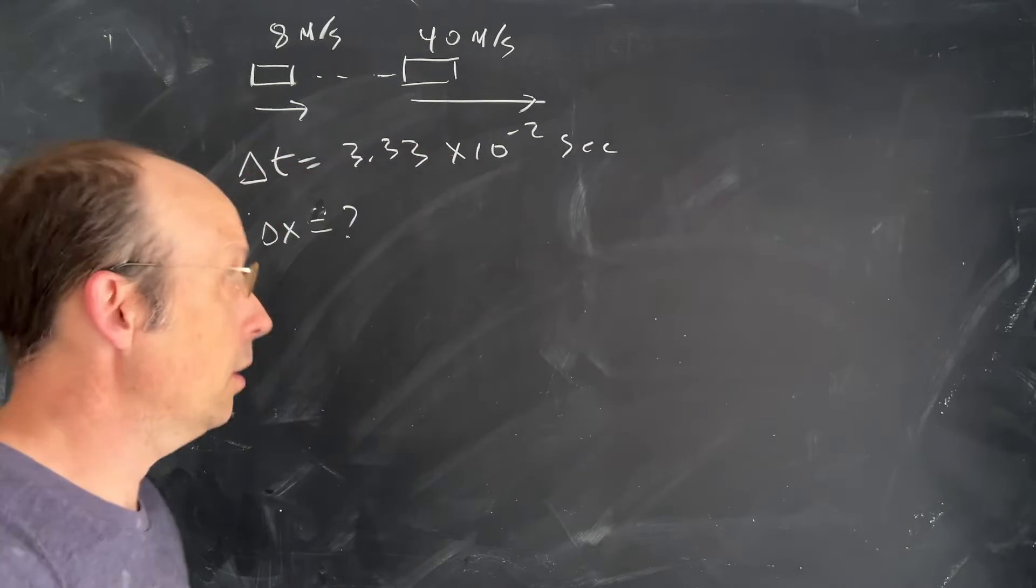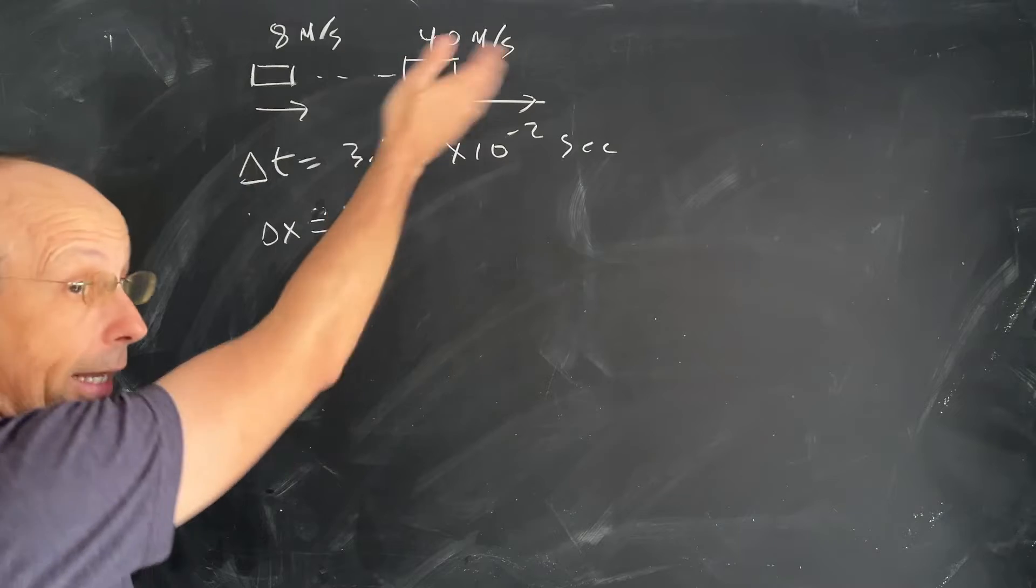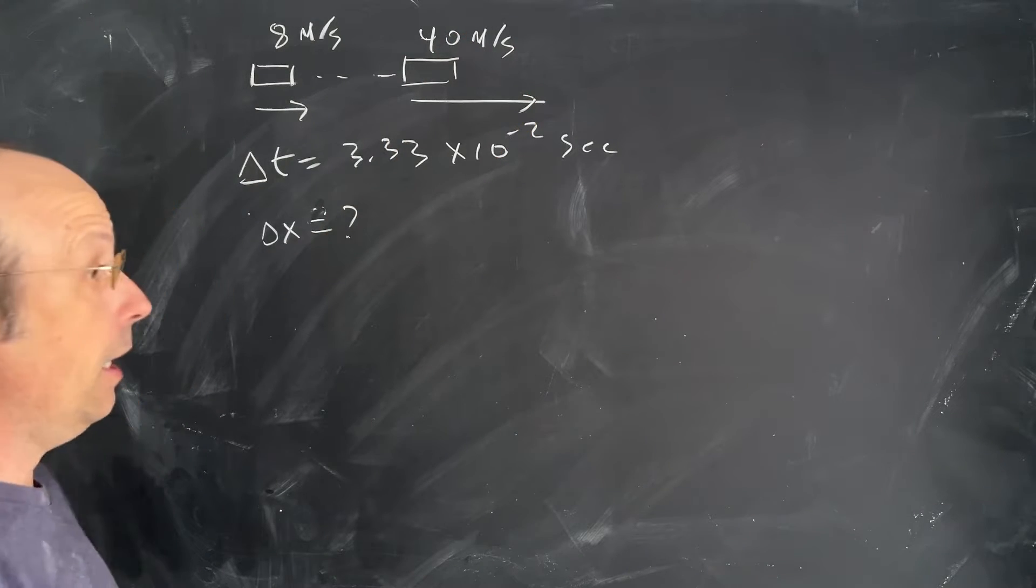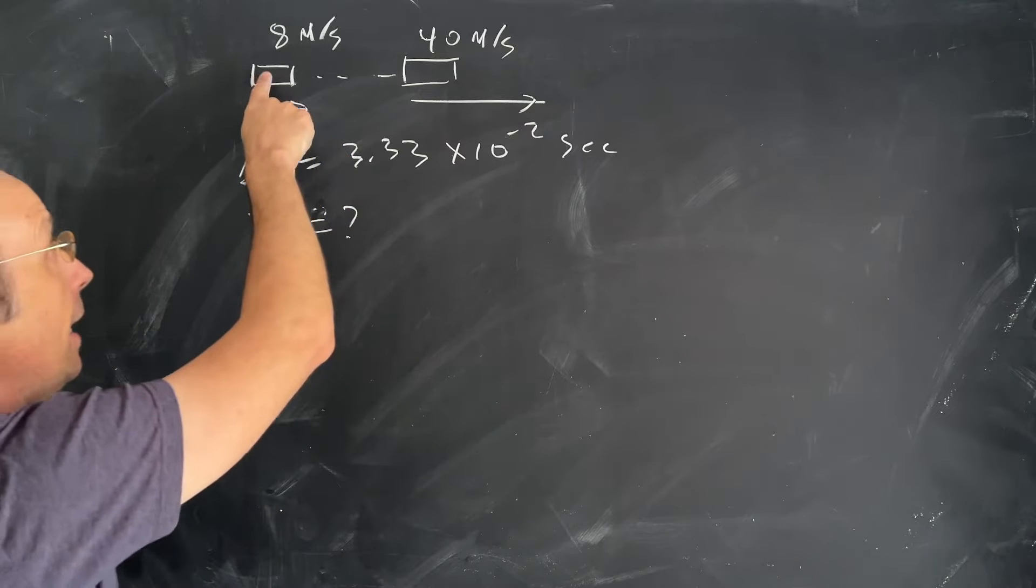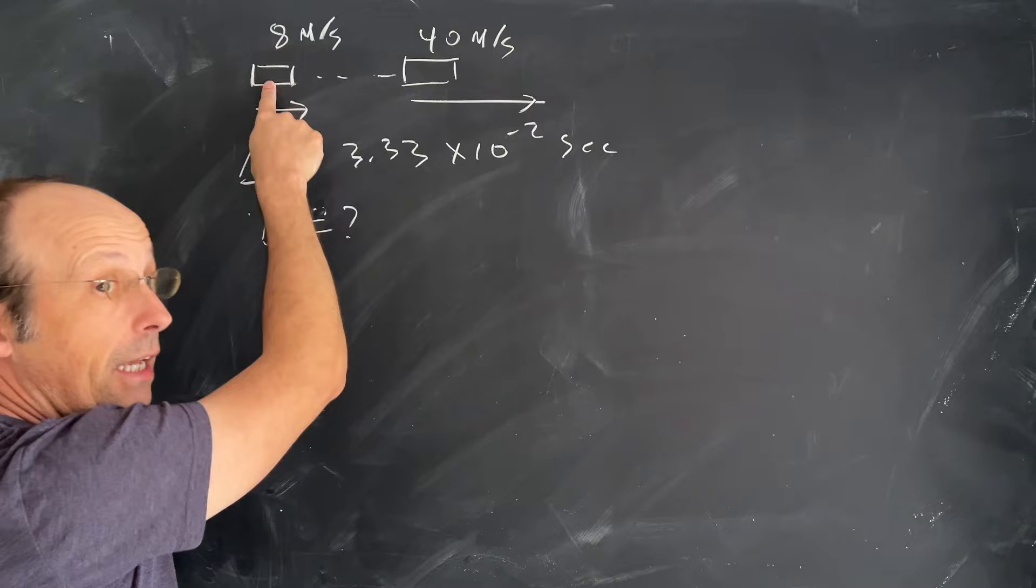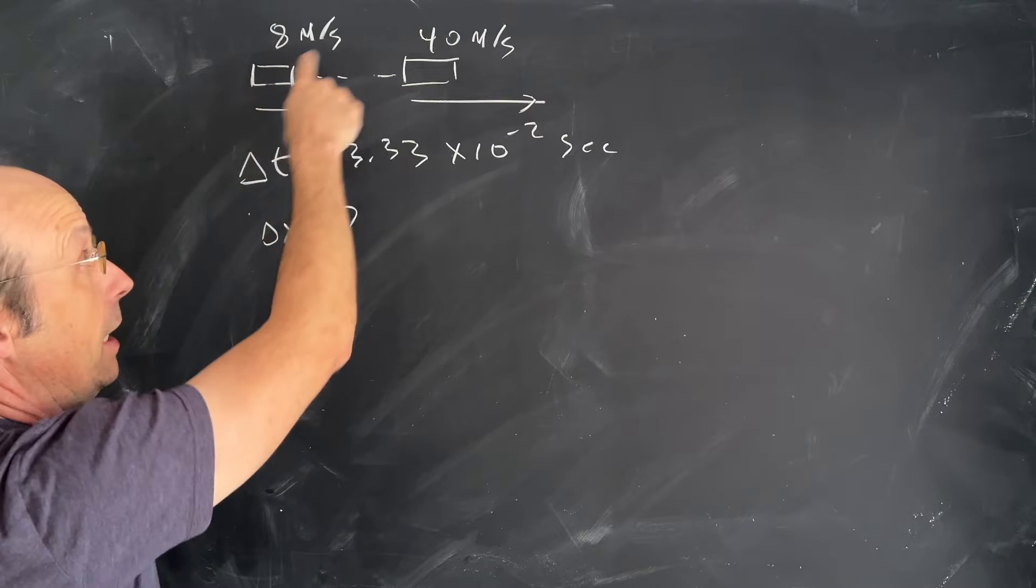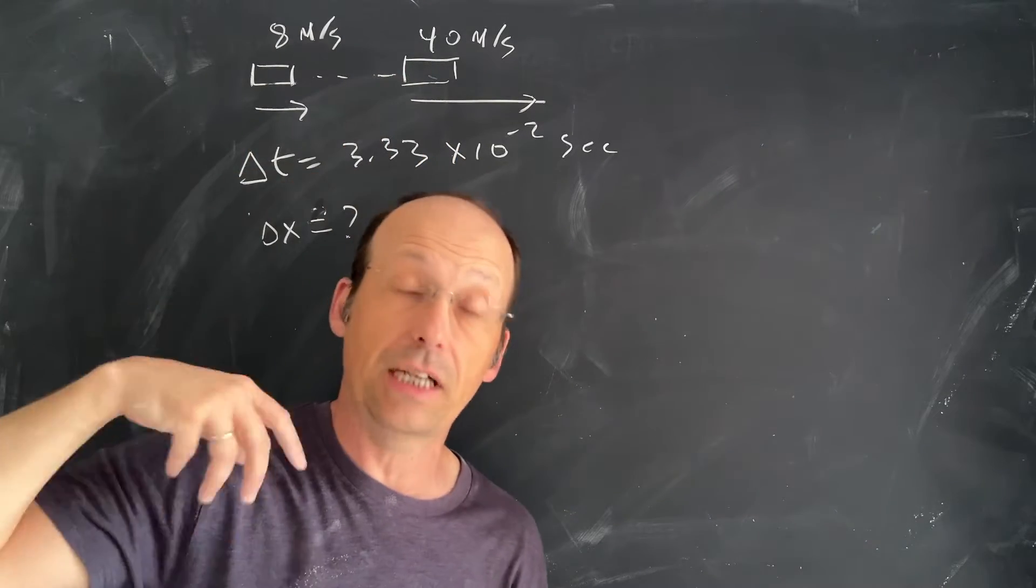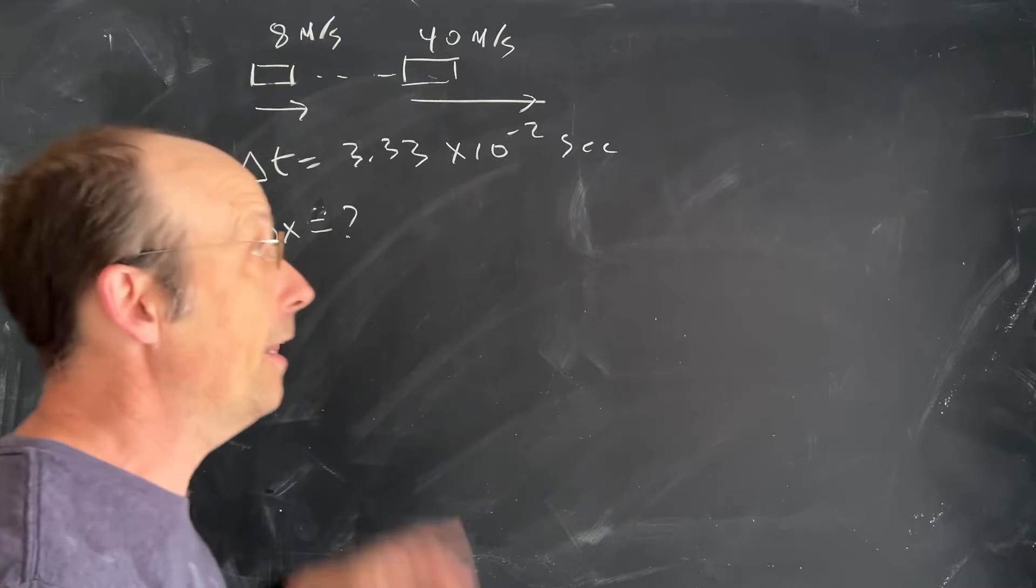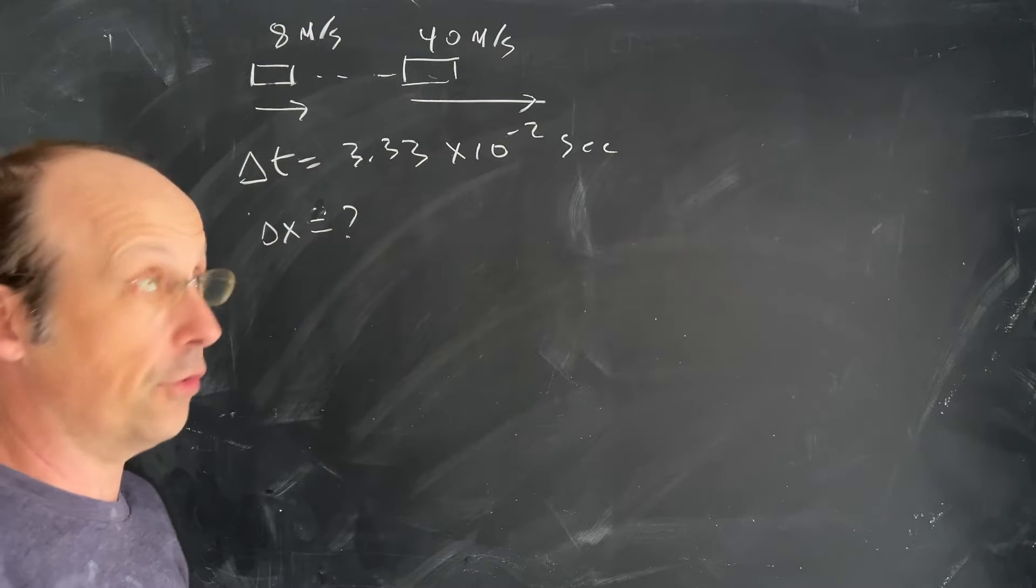Here is a physics question. A hockey puck, which I've already drawn here, is hit with a stick, slap shot. It's hit when the puck is already going 8 meters per second, and it ends up going 40 meters per second in a time interval of 3.33 times 10 to the negative 2 seconds, so a very short amount of time. And the question is, how far did it travel during that time?